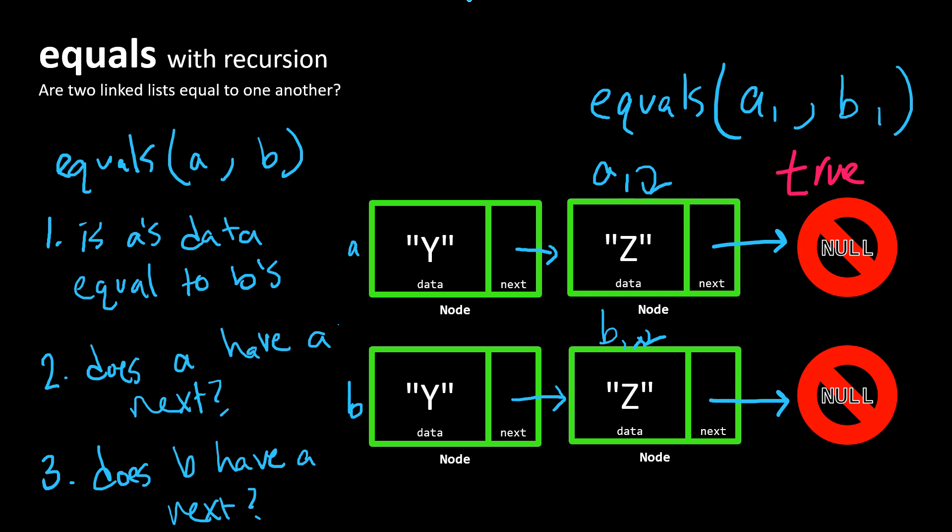If these three conditions are met, then we are going to recursively call equals with A dot next and B dot next.